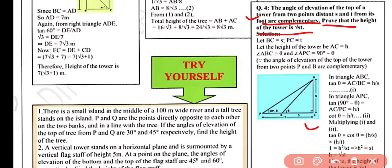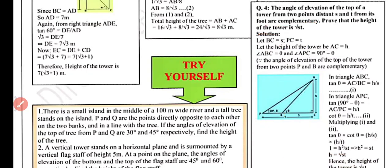Let two points B and P be at distances S and T from the foot of the tower at point C, so BC = S and PC = T. Let the height of the tower AC = H. Let angle ABC = θ. Since the two angles are complementary, their sum is 90°, so angle APC = 90° − θ. Remember: complementary angles sum to 90°, while supplementary angles sum to 180°.